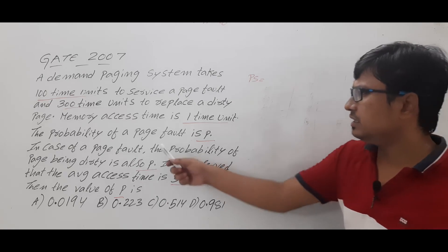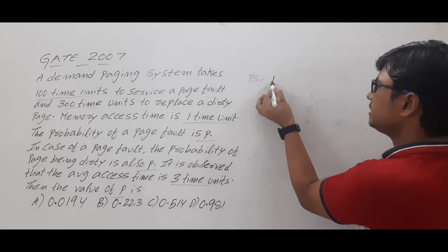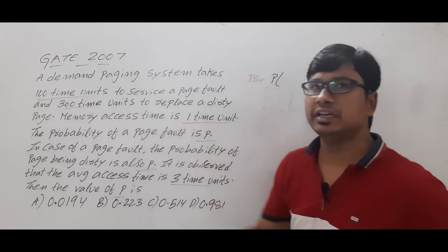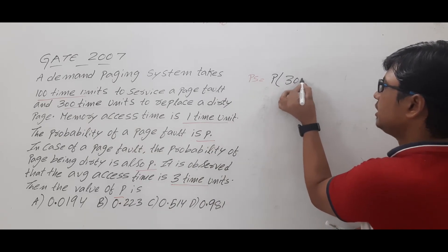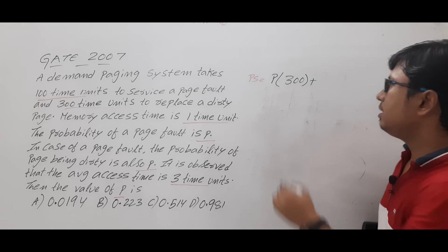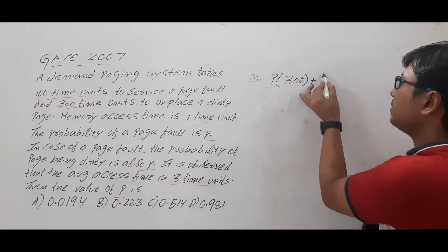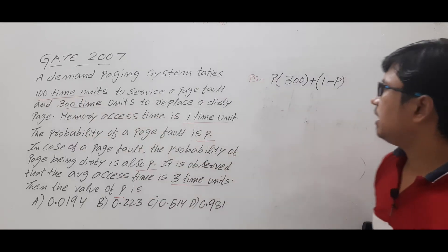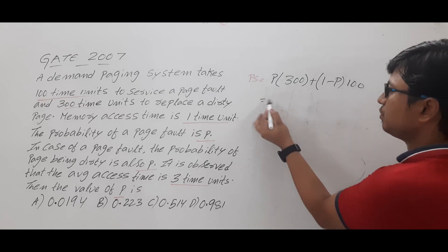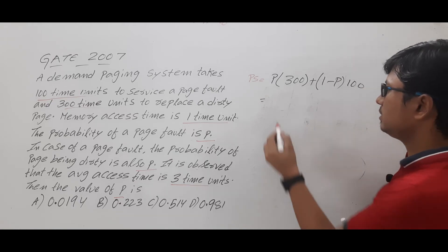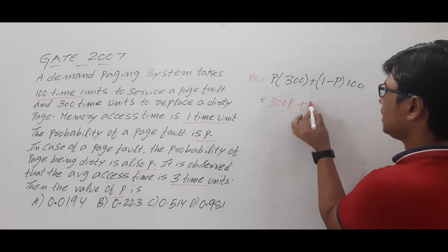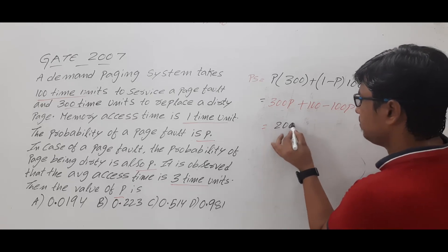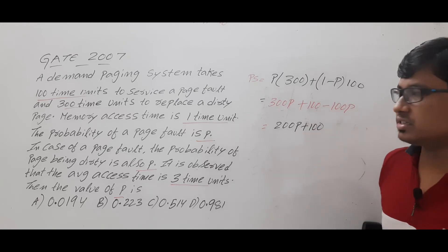The probability of a page being dirty is P, so if the page is dirty it takes 300 time units, and the probability of the page not being dirty is 1 minus P, taking 100 time units. So the page fault service time equals 300P plus 100(1 − P), which simplifies to 200P plus 100.